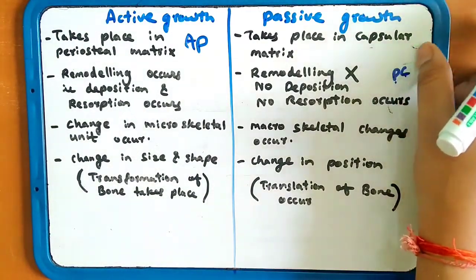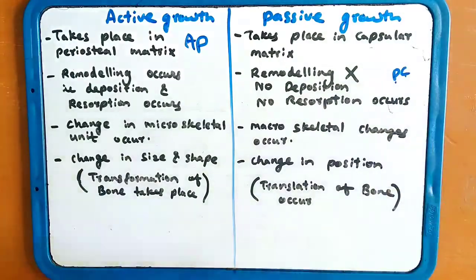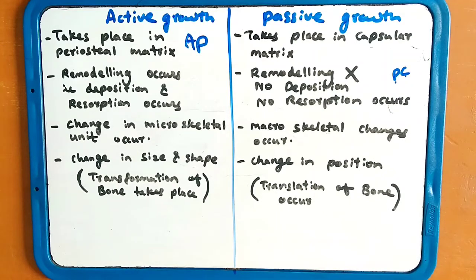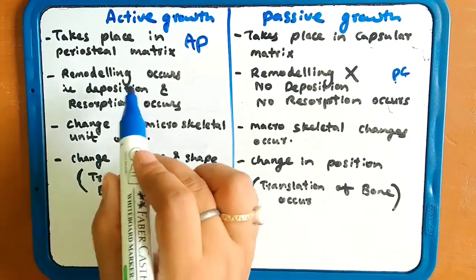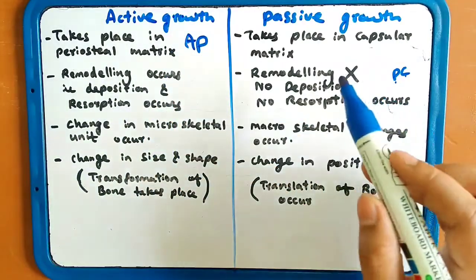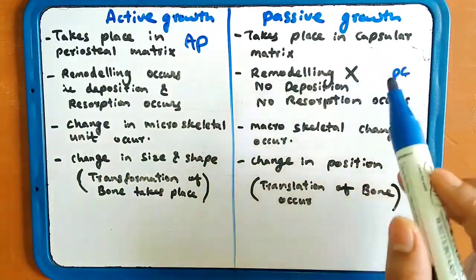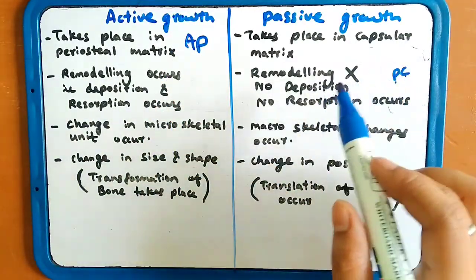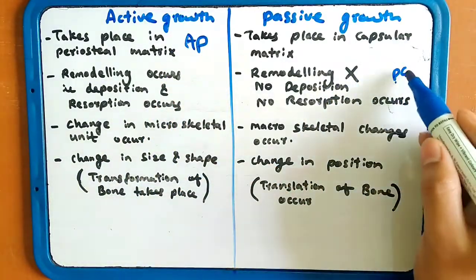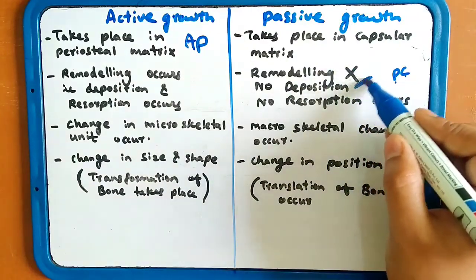Remodeling occurs in active growth — that is deposition and resorption. In remodeling, deposition and resorption occur. But in passive growth, remodeling does not take place — no deposition, no resorption occurs.